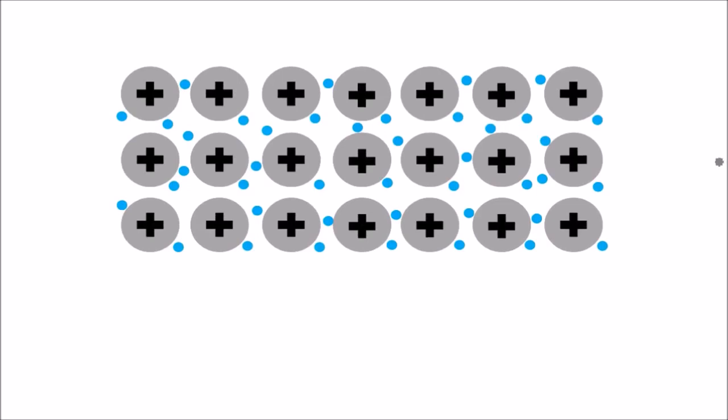So metal atoms are arranged like this. There is a lattice of metal atoms arranged in regular layers.